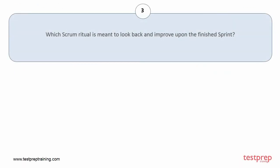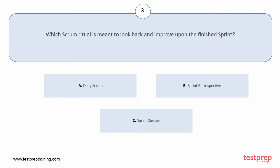Question number 3: Which scrum ritual is meant to look back and improve upon the finished sprint? Your options are: A, daily scrum; B, sprint retrospective; C, sprint review. The correct answer is option B.